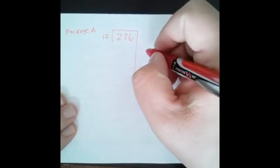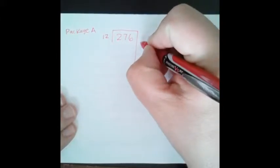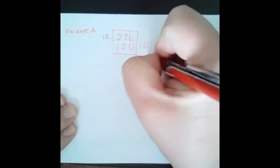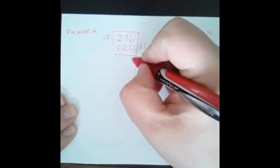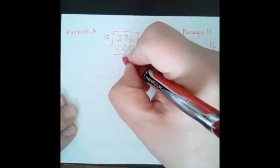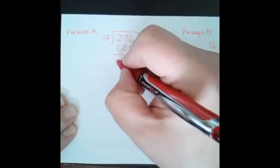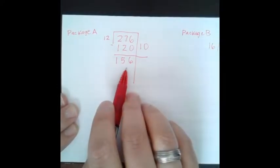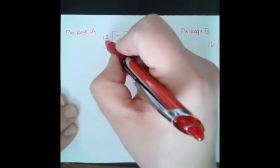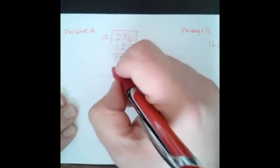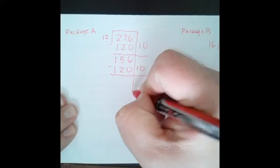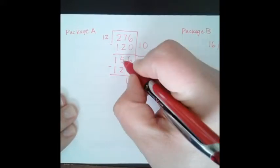We have package A, and it was $276 divided by 12 per ticket. So I'm going to start with, we're going to go right ahead and start with 10. 10 times 12 is 120. So I know that. So 6 take away 0 is 6. 7 take away 2 is 5. 2 take away 1 is 1. So now we're left with 156. Well, I know that we can do another 10, so we'll go ahead and do that. So 10, 12 times 10 is 120.